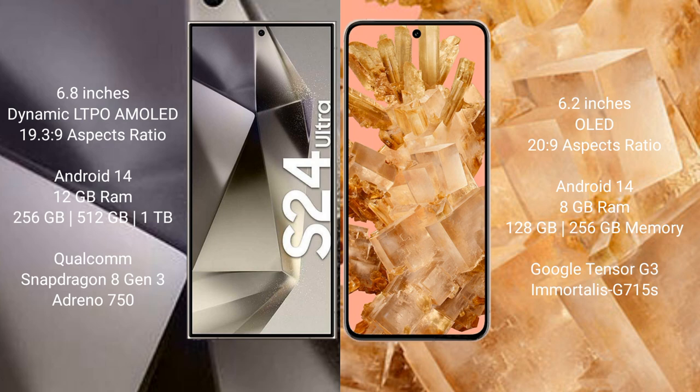Samsung Galaxy S24 Ultra runs on the Android 14 operating system. Google Pixel 8 also runs on the Android 14 operating system. Samsung Galaxy S24 Ultra comes with 12GB RAM and 256GB, 512GB, or 1TB internal storage options.